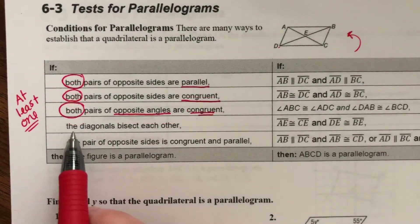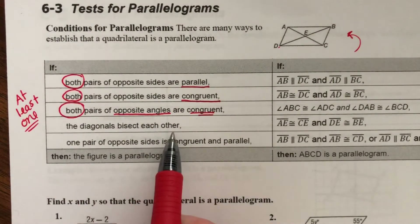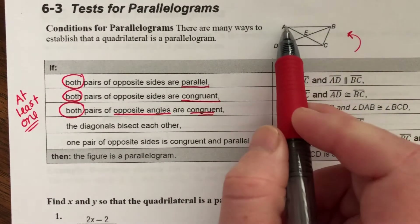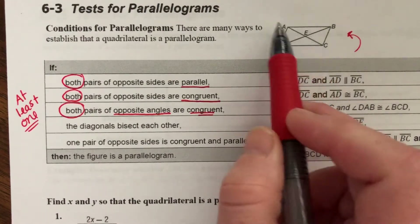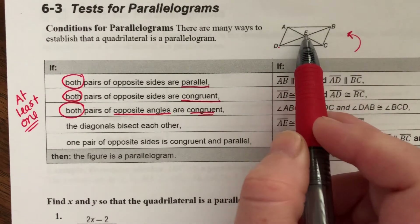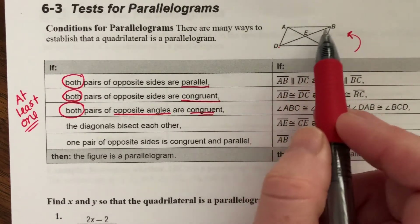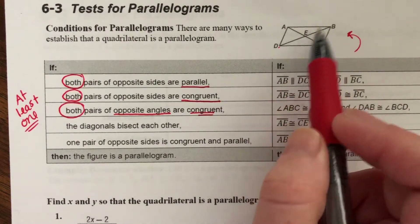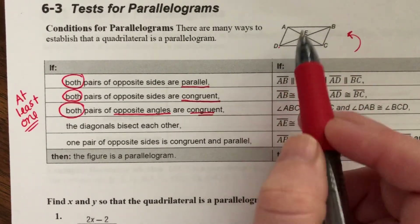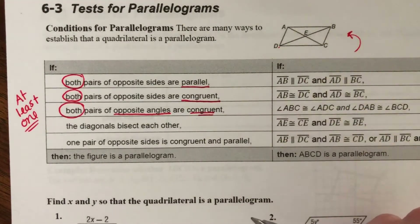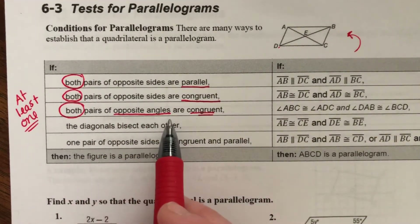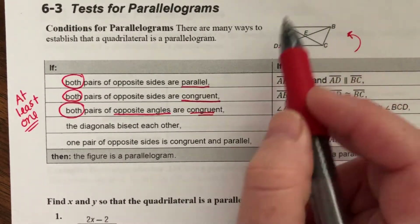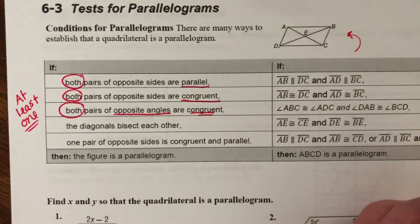Fourth: the diagonals bisect each other. This diagonal connecting opposite angles is cut in half by the other diagonal, which is also cut in half. Both diagonals have to be cut in half. If we just know that one fact, this by itself is enough to know this is a parallelogram.